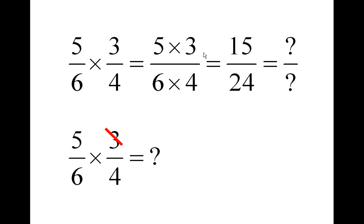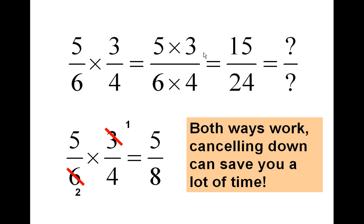So this arcane process that maths teachers invented called cancelling works by crossing the three out and putting a one. What are we doing? We're dividing by three. Three into three goes one. And then you cross the six out and put a two. What are we doing? Three into six goes two. That's the common factor. And then we write the answer as five eighths.